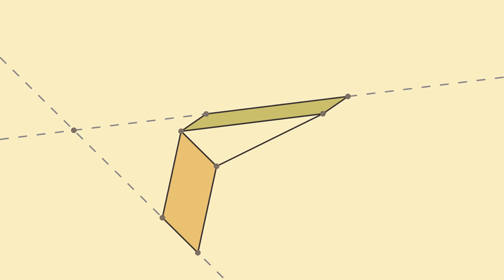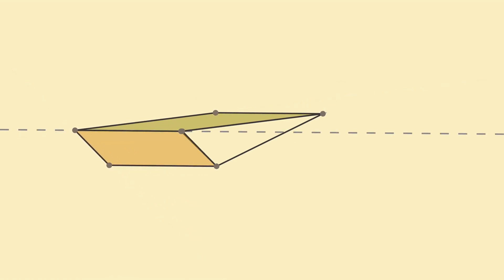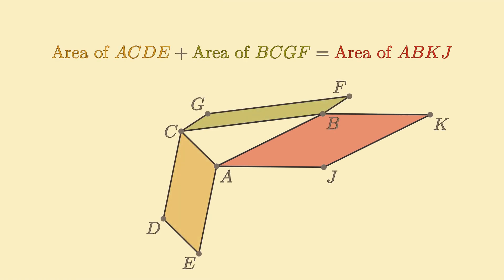Shear the parallelograms until they meet at a common point H. Then shear the parallelograms until their bottom edges align with the remaining edge of the triangle. By Cavalieri's principle, this resulting figure has the same area as the sum of the two original parallelograms. I leave it to you to verify that this is indeed a parallelogram.